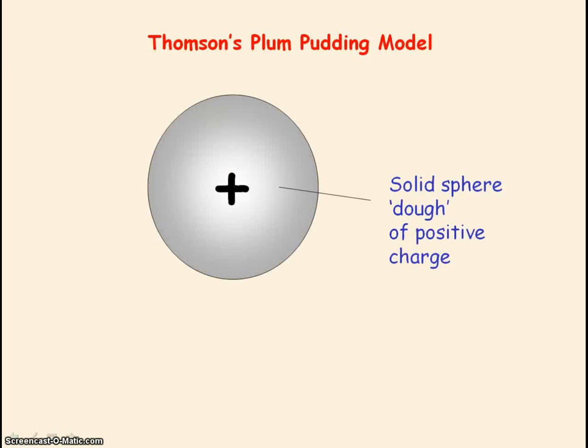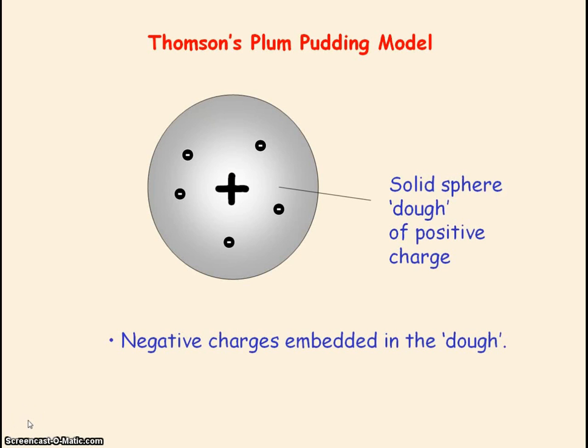Before the discovery of the nucleus, we had Thomson's plum pudding model of the atom. The model was that the atom was made like a solid sphere, a dough of the plum pudding, of positive charge. And embedded in the sphere were negative charges, which were the plums in the plum pudding. Overall, the atom was neutral.